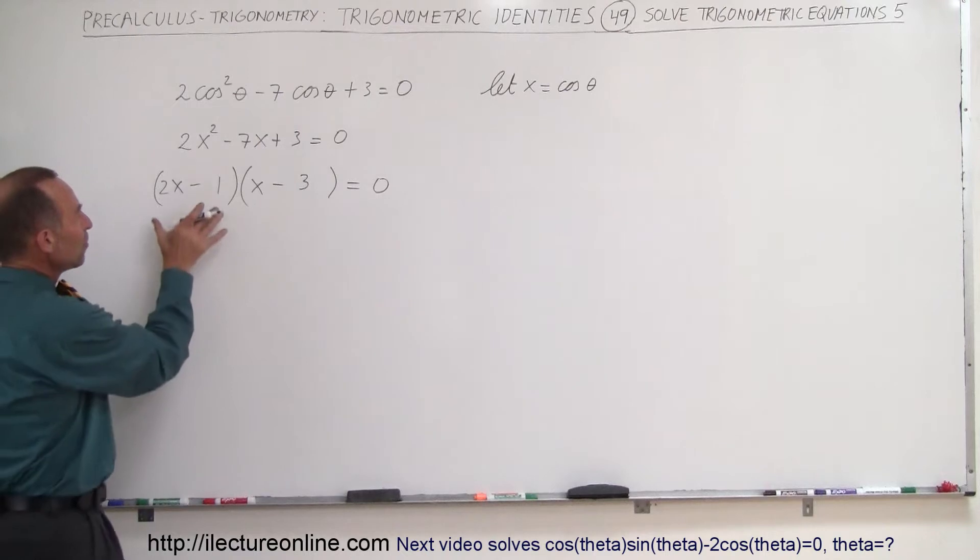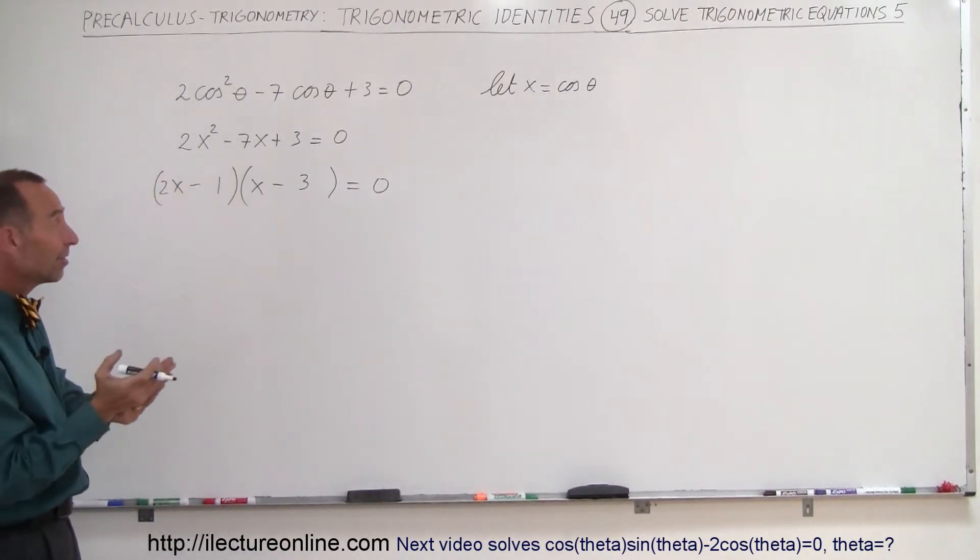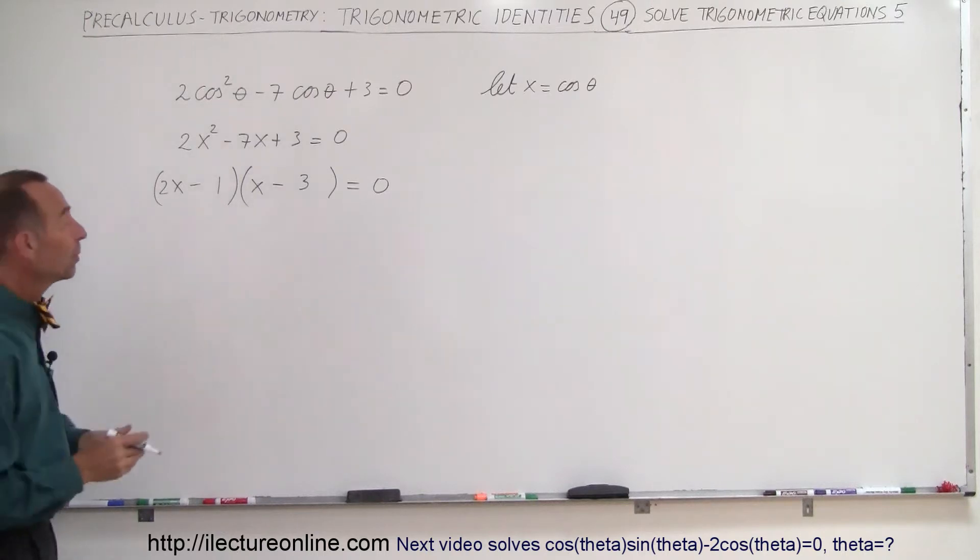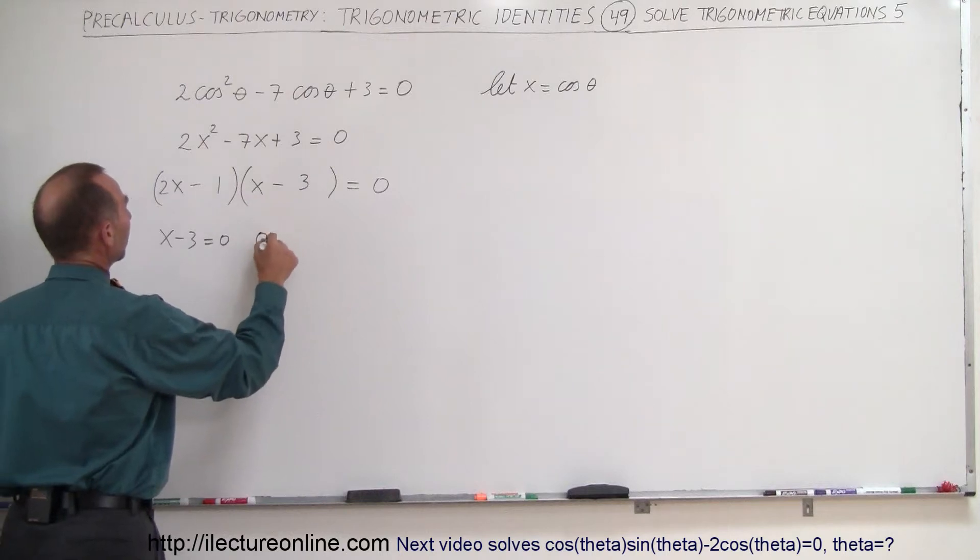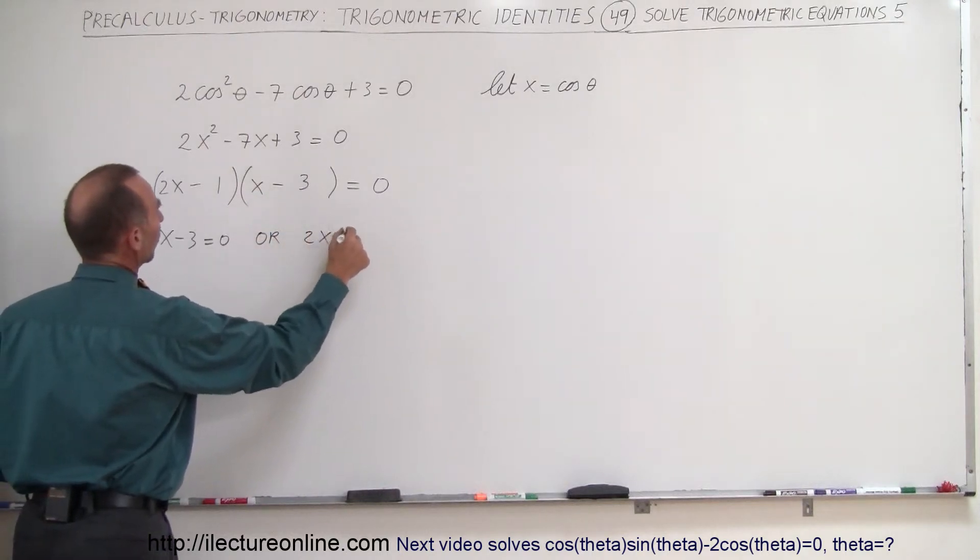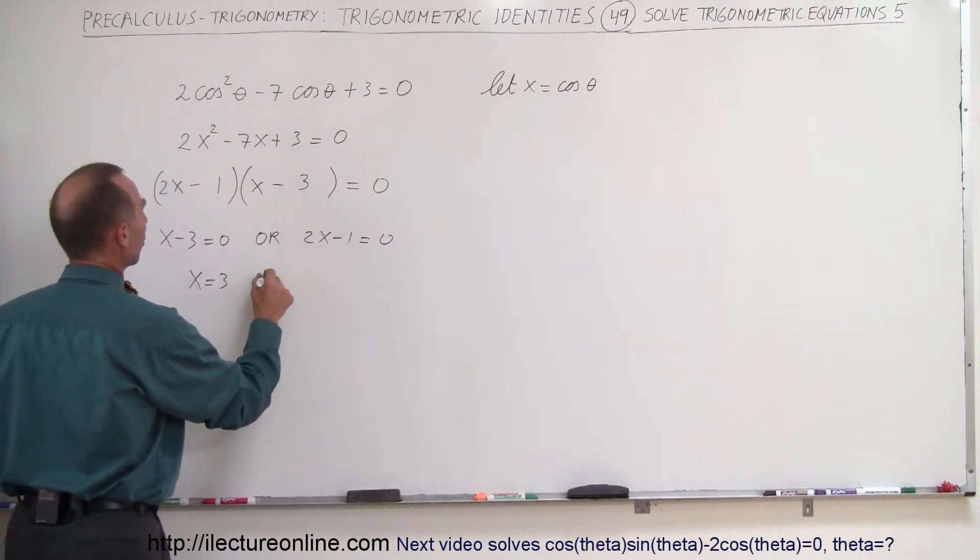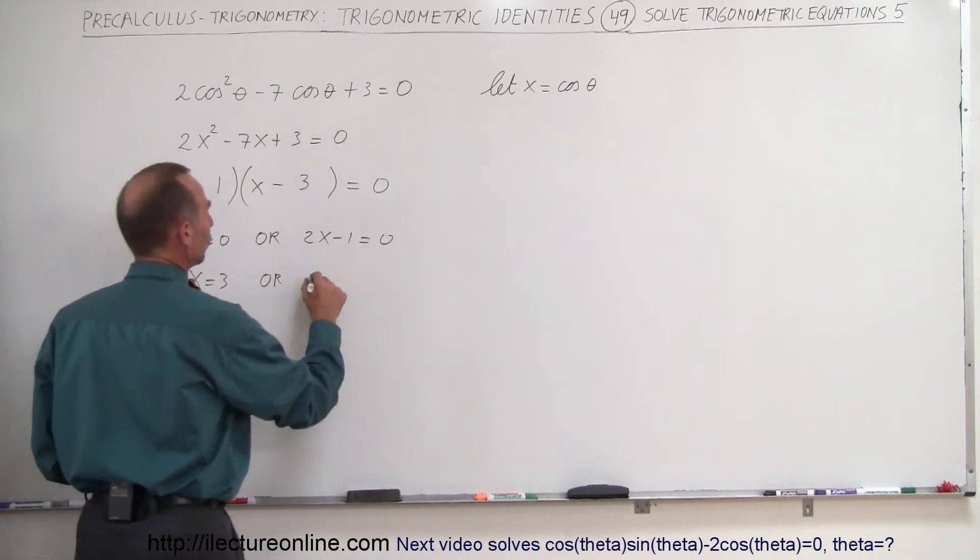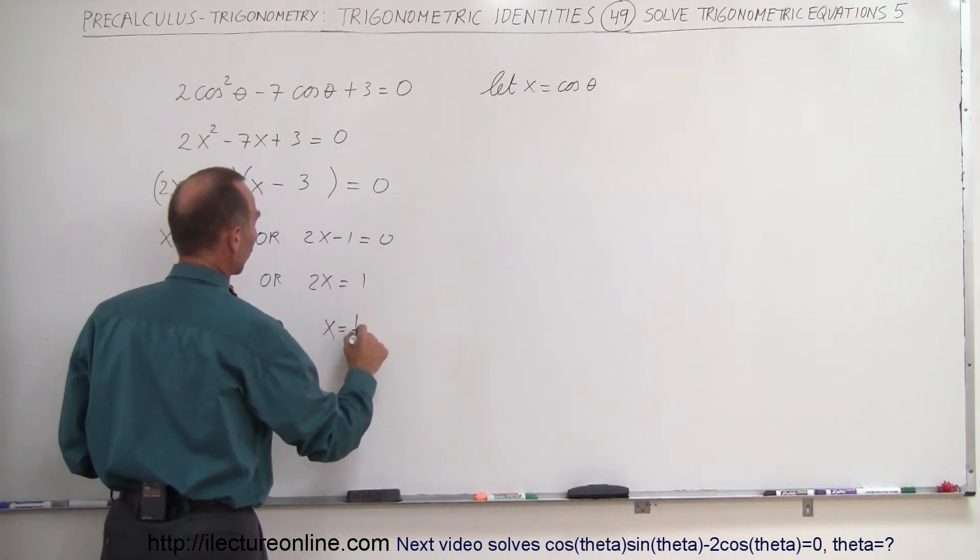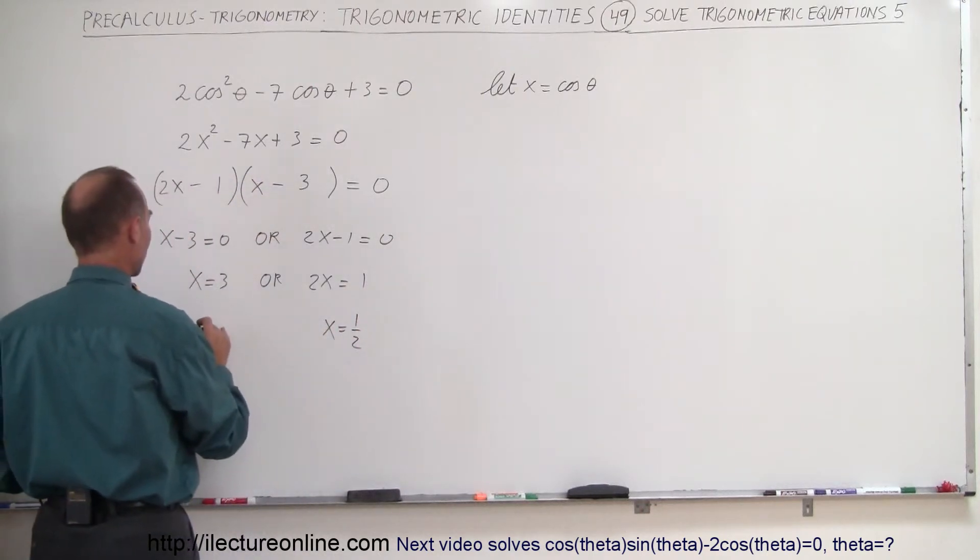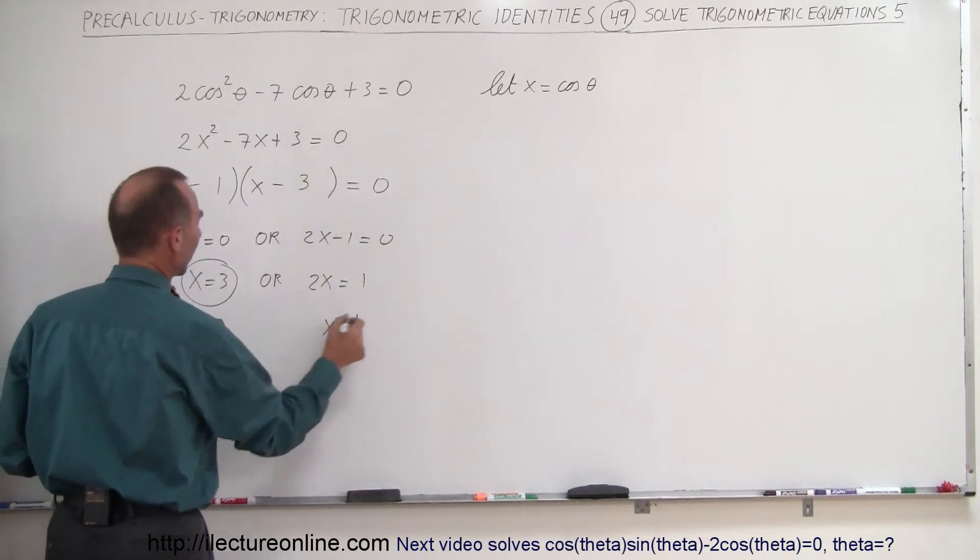Now we have two binomials multiplied together that gives us zero. Anytime you multiply two things and get zero, that means either one or the other must be zero, which means x minus 3 must equal zero, or 2x minus 1 must equal zero, which means that x is equal to 3, or 2x equals 1, or x equals 1 half. And here we have x equals 3, and x equals 1 half.